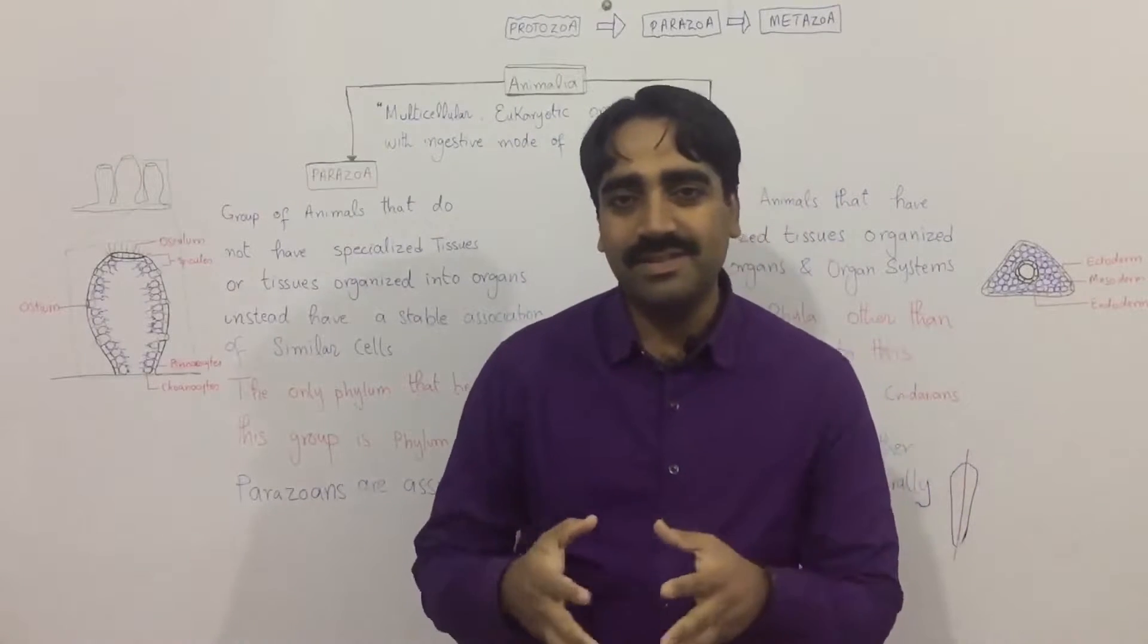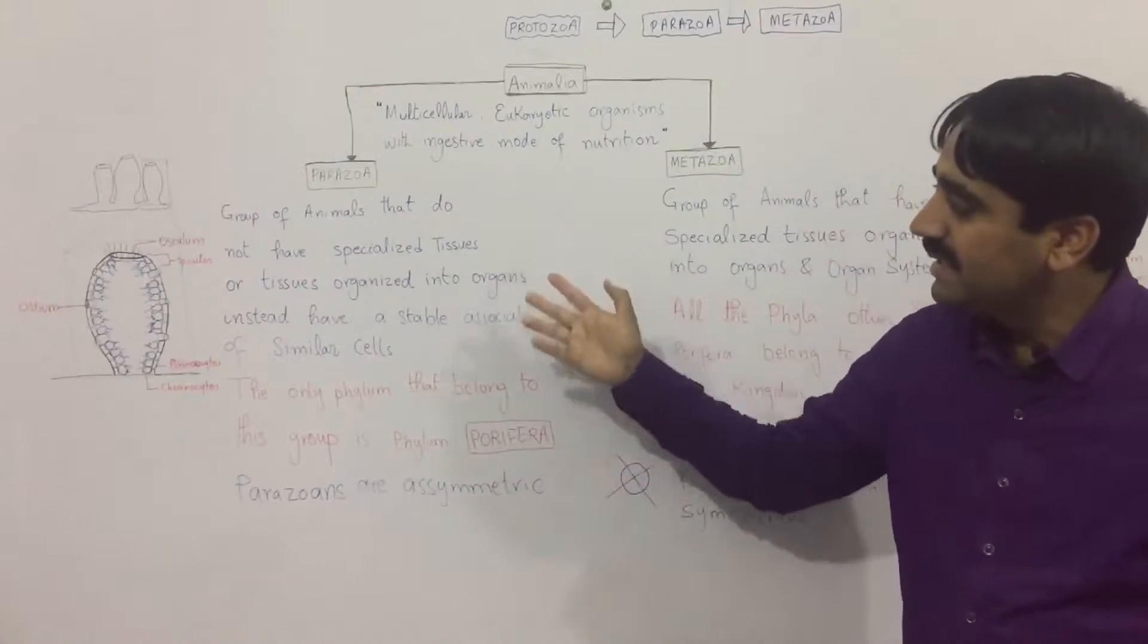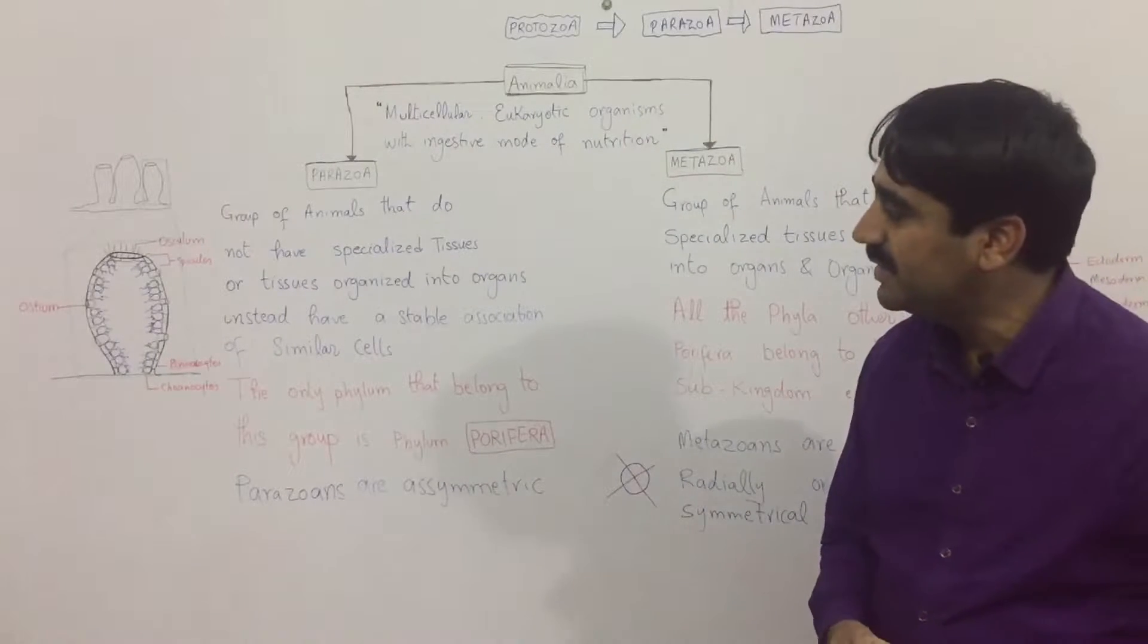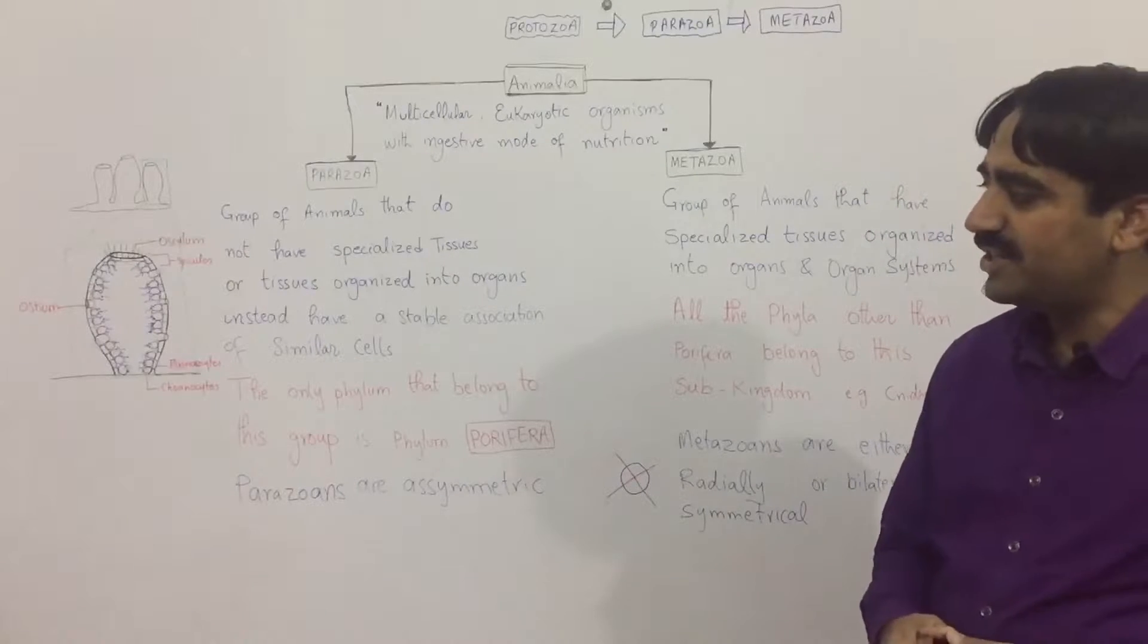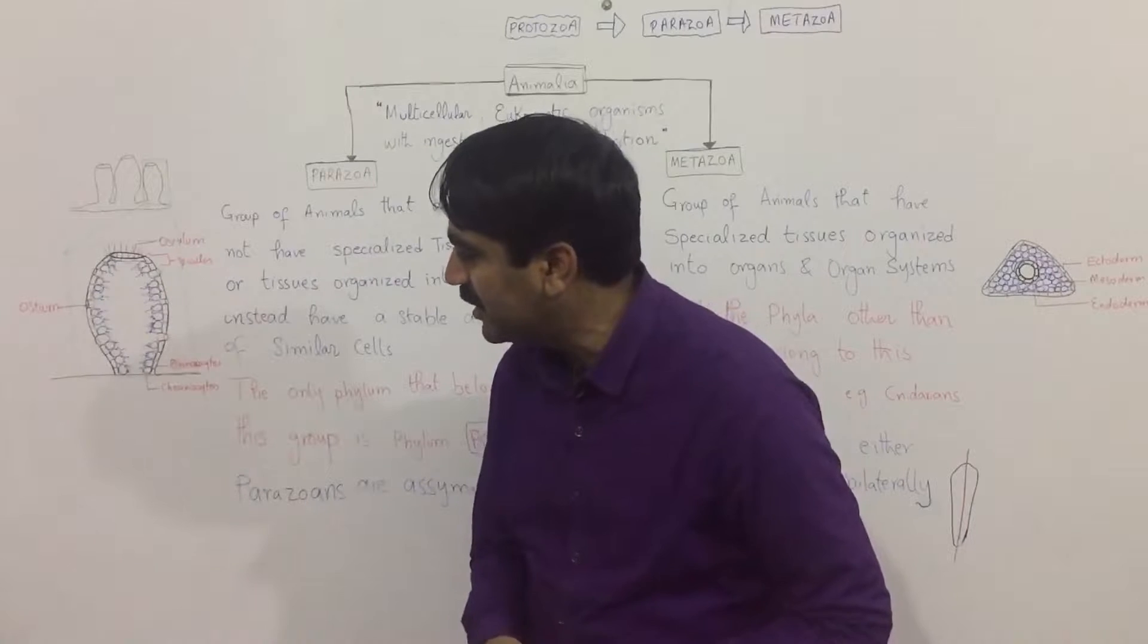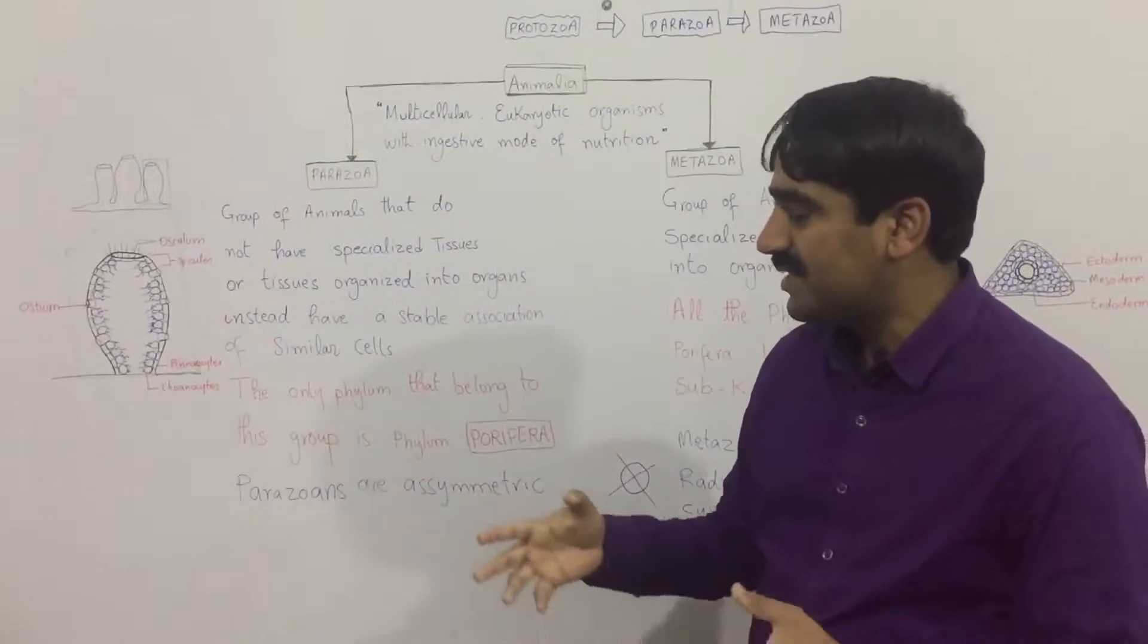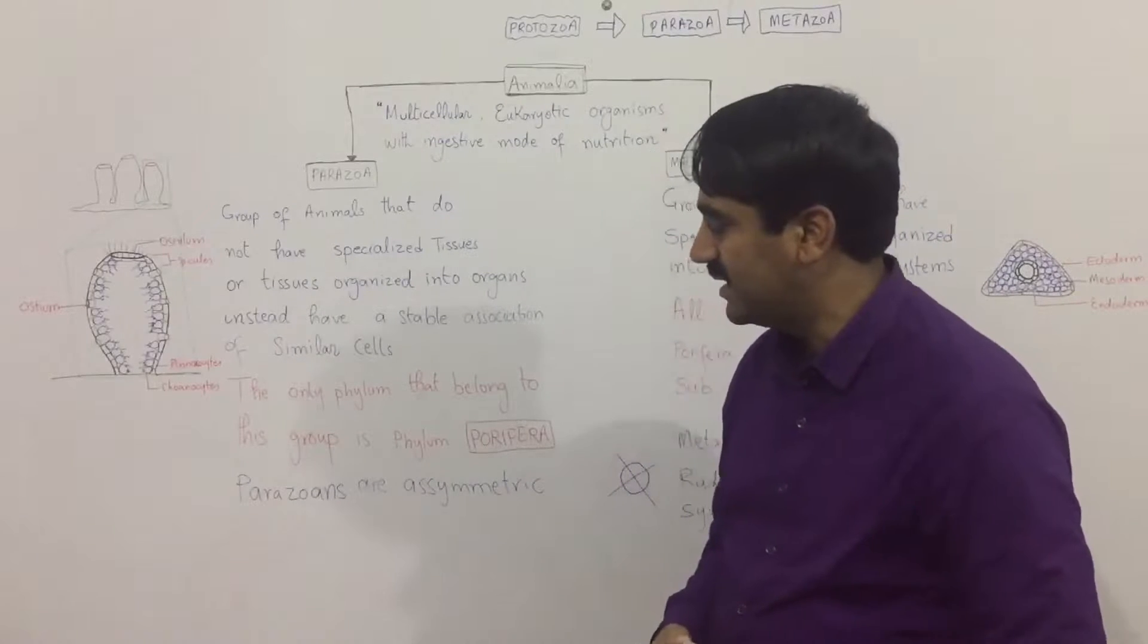What are the characteristics of the parazoa? The parazoans are the group of animals that do not have specialized tissue. As you can see over here, these are just a bunch of cells, a stable configuration of similar cells.